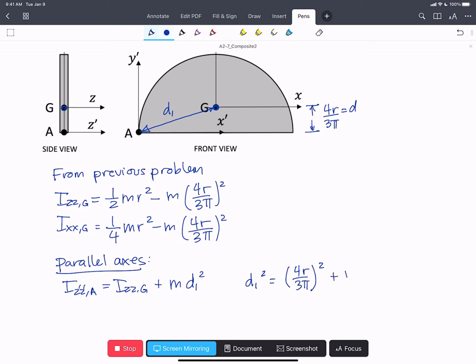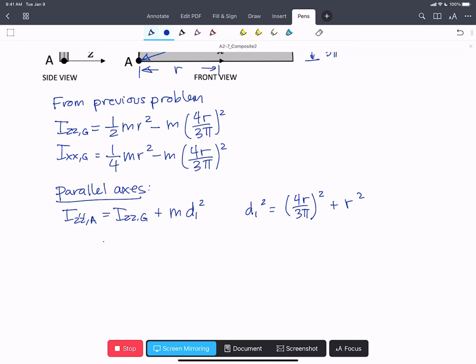That's the vertical direction plus r². That's the distance from G to A in the horizontal. So we'll plug in our expressions.